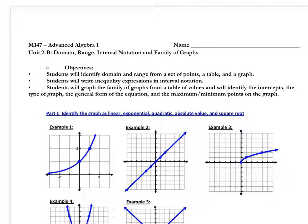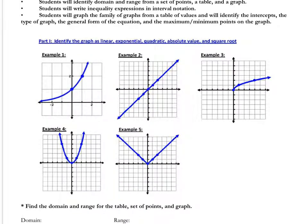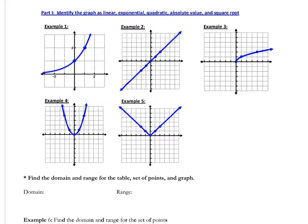Today we are going to learn about domain, range, and interval notation for our family of graphs. If you want to take a minute and go over part one and write down the graphs — linear, exponential, quadratic, absolute value, and square root — as a little warm-up, go ahead and do that now.